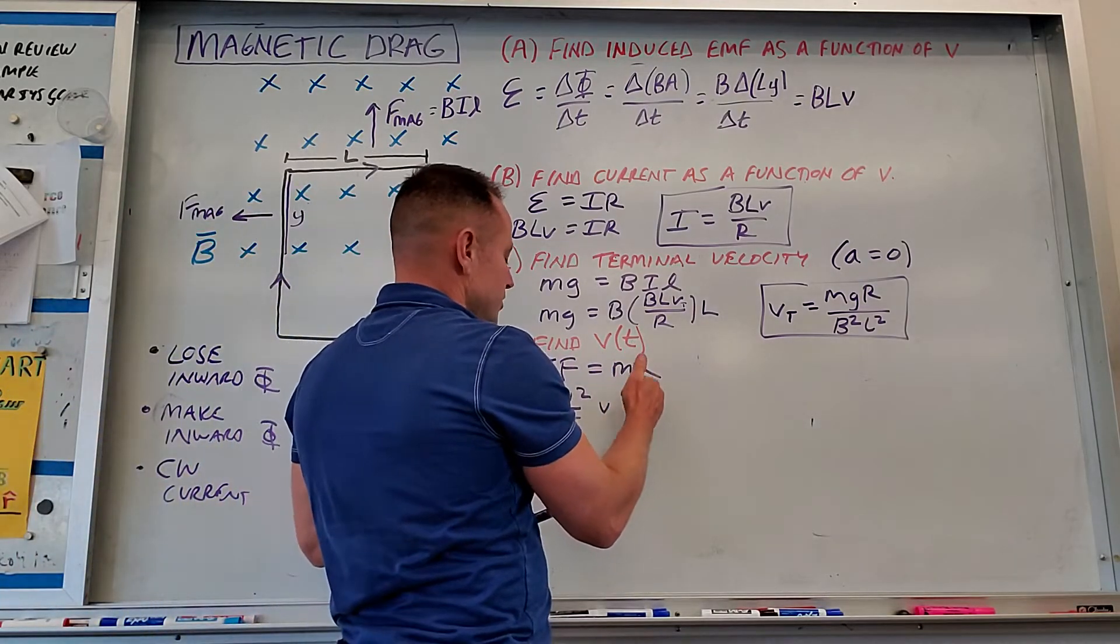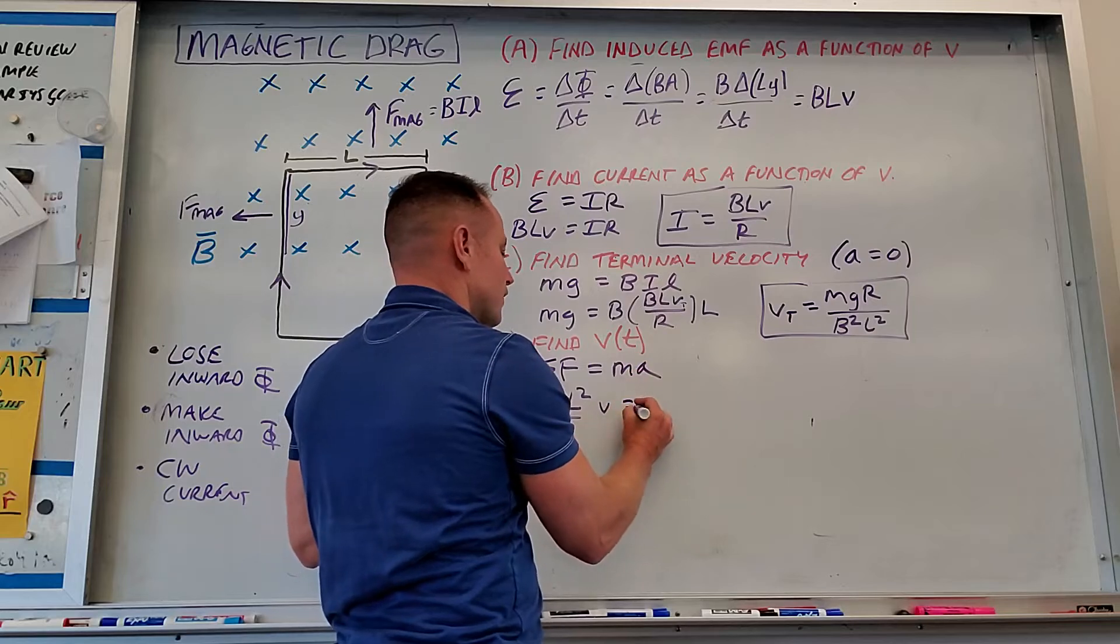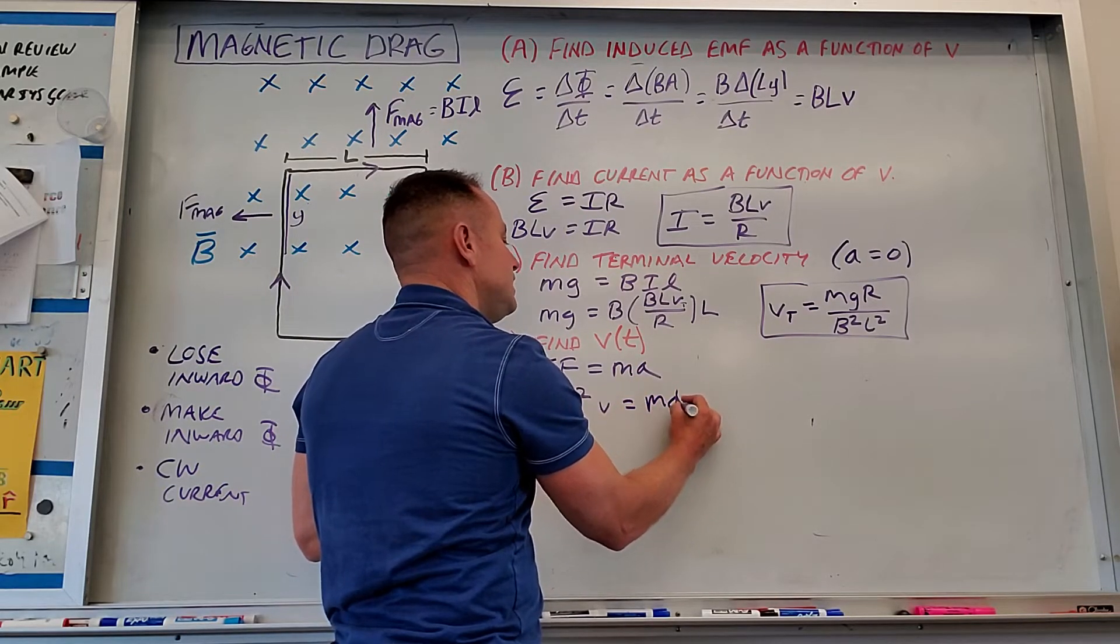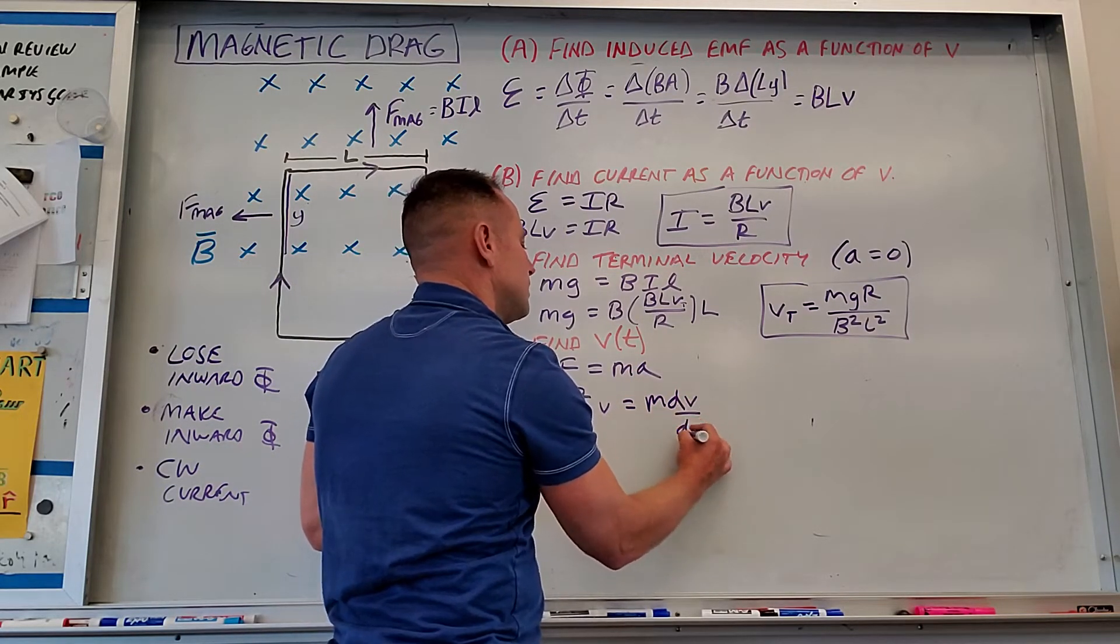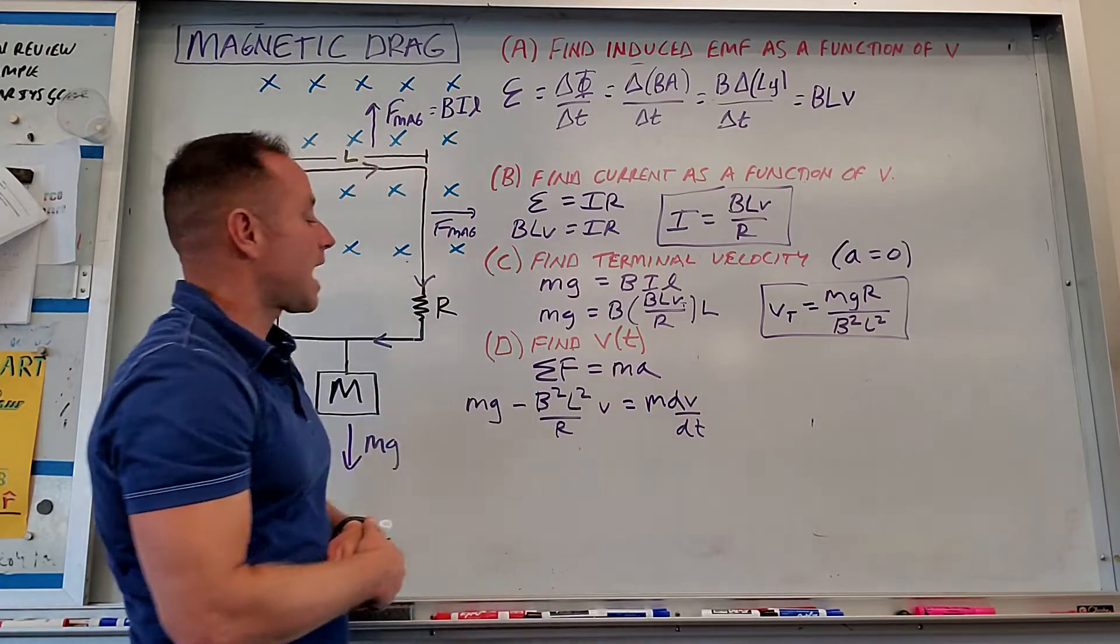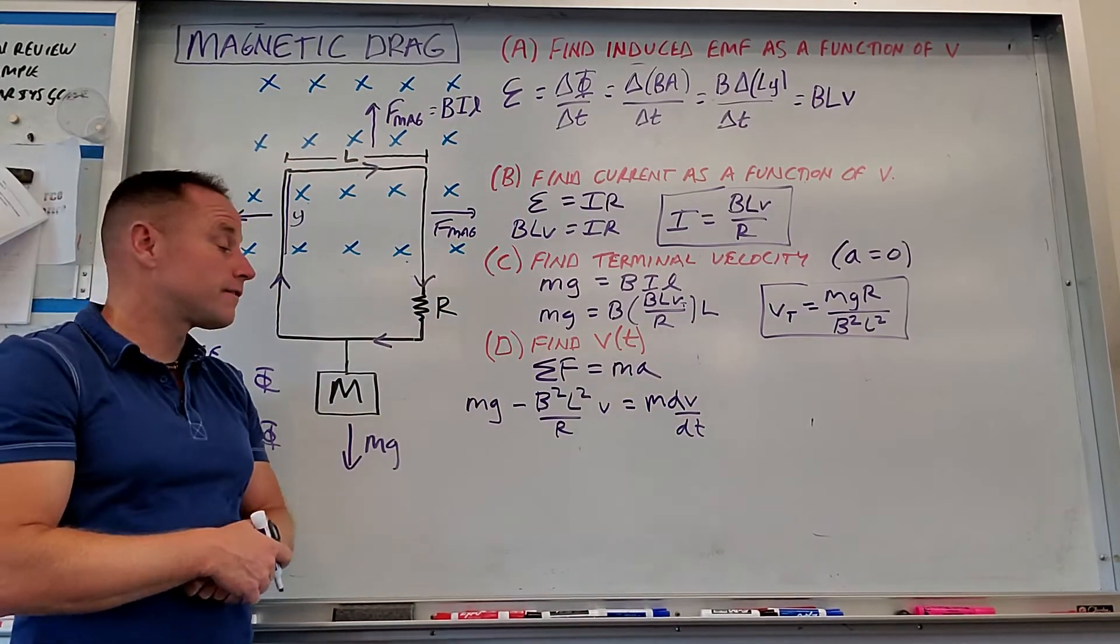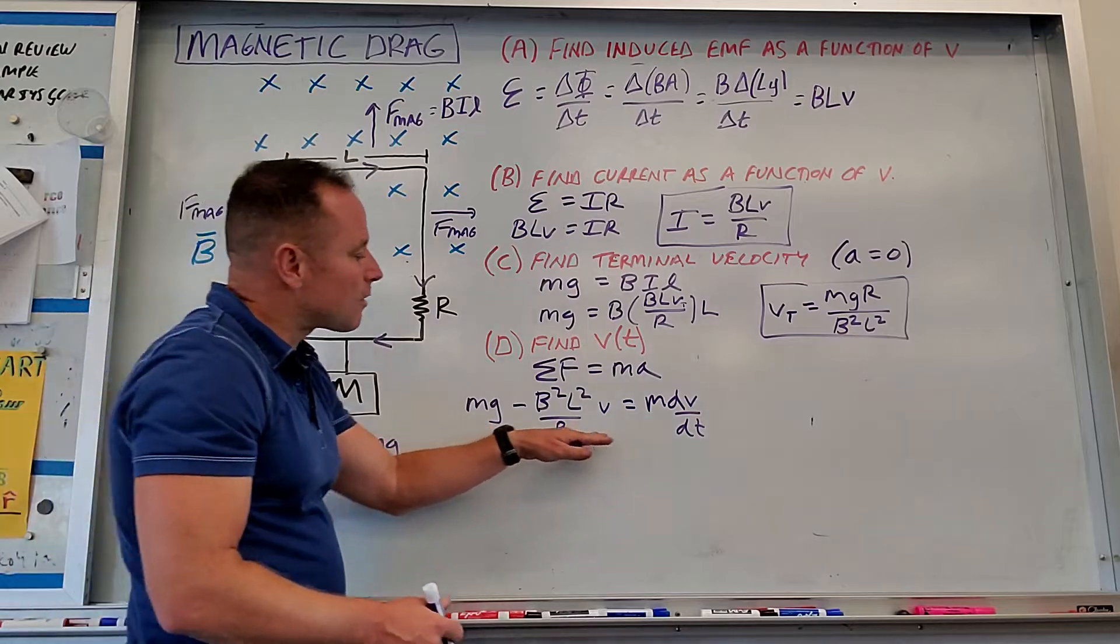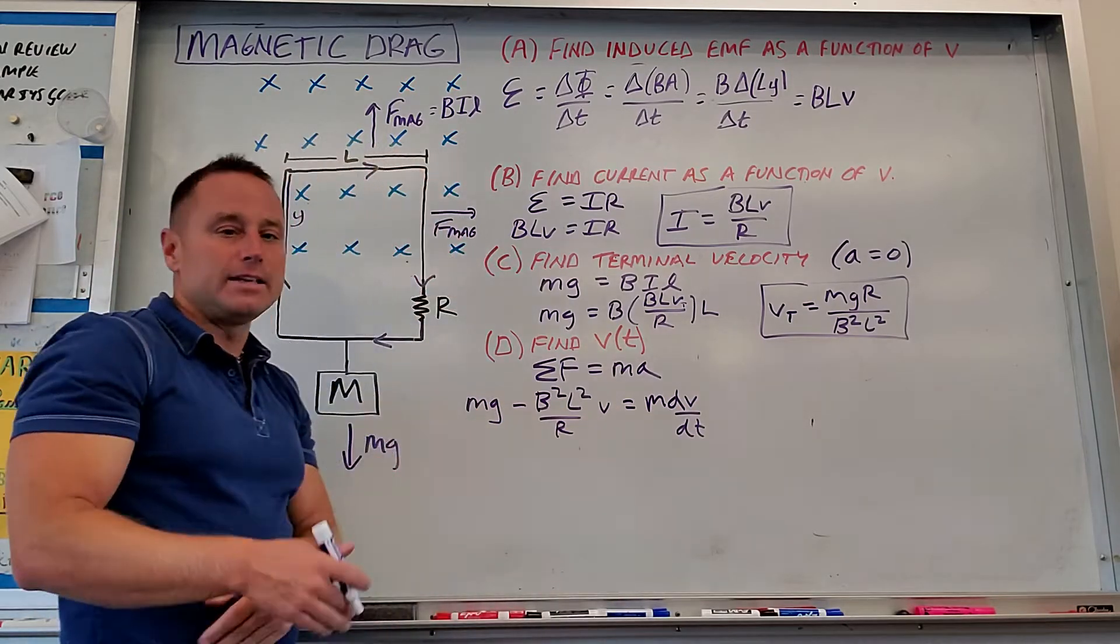And then what we want to do, since we're looking for V of T, is substitute for A, dV/dt, because velocity is the time derivative, the rate of change of acceleration. So this is now a differential equation for V that needs to be solved.